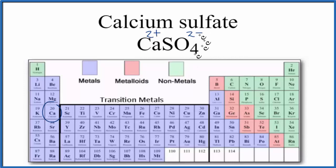You can see the 2+ and the 2- cancel each other out, we have a net charge of 0. The positive and negative ions are attracted to form an ionic bond.